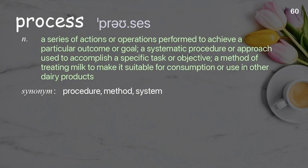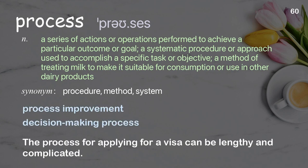Process: a series of actions or operations performed to achieve a particular outcome or goal; a systematic procedure or approach used to accomplish a specific task or objective. Examples: process improvement, decision-making process. The process for applying for a visa can be lengthy and complicated.